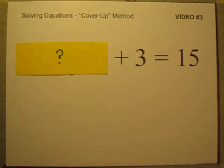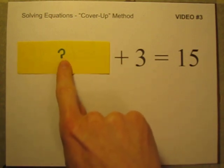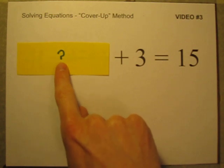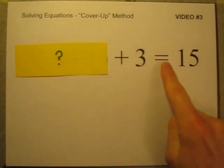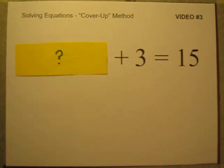Now that's manageable. That I can do. So this chunk that I'm covering up must be equal to 12. Because 12 plus 3 equals 15. So everything under here must be equal to 12.